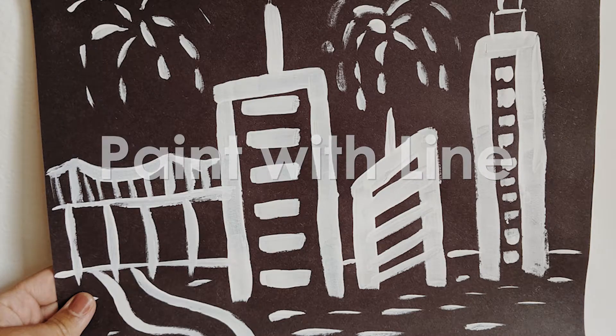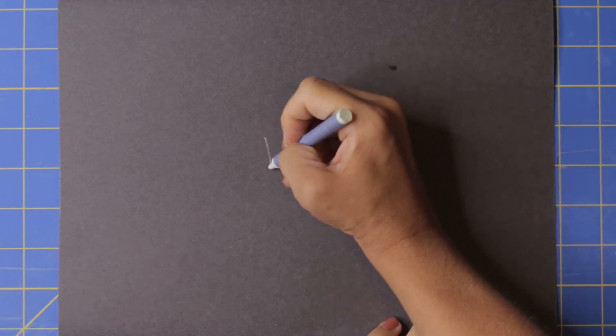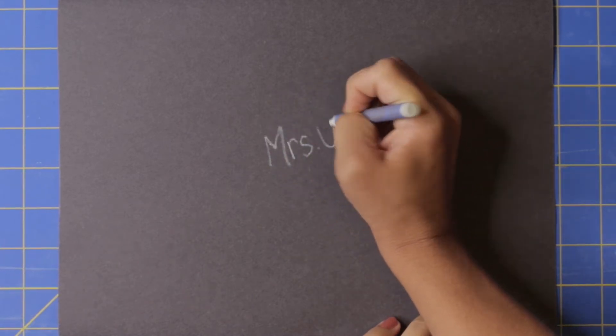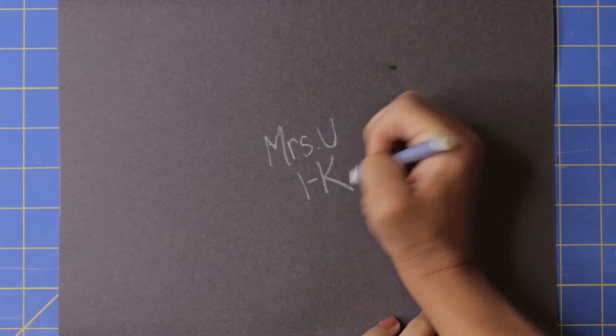Activity number two, painting with line. For this activity you will need construction paper, a white crayon, white paint, and a paintbrush.